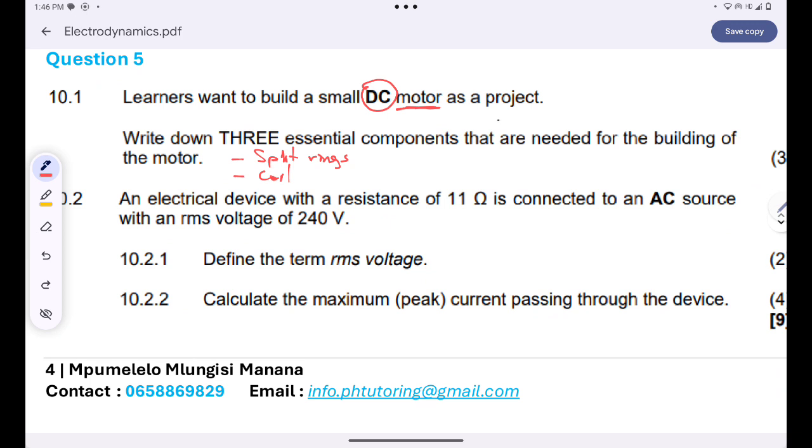An electrical device with a resistance of 11 ohms is connected to an AC source with an RMS voltage of 240 volts. First question they want us to define the term RMS voltage.